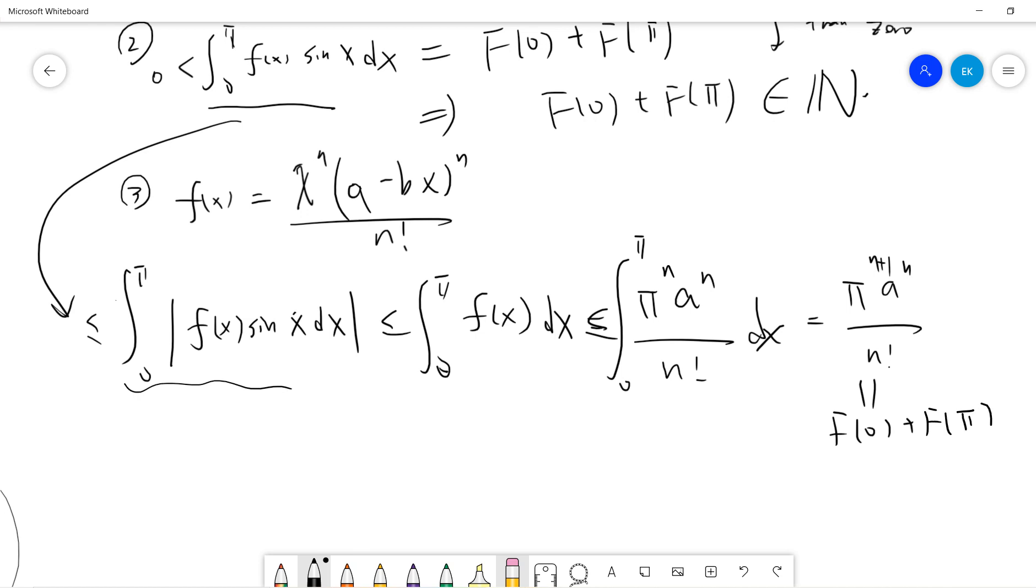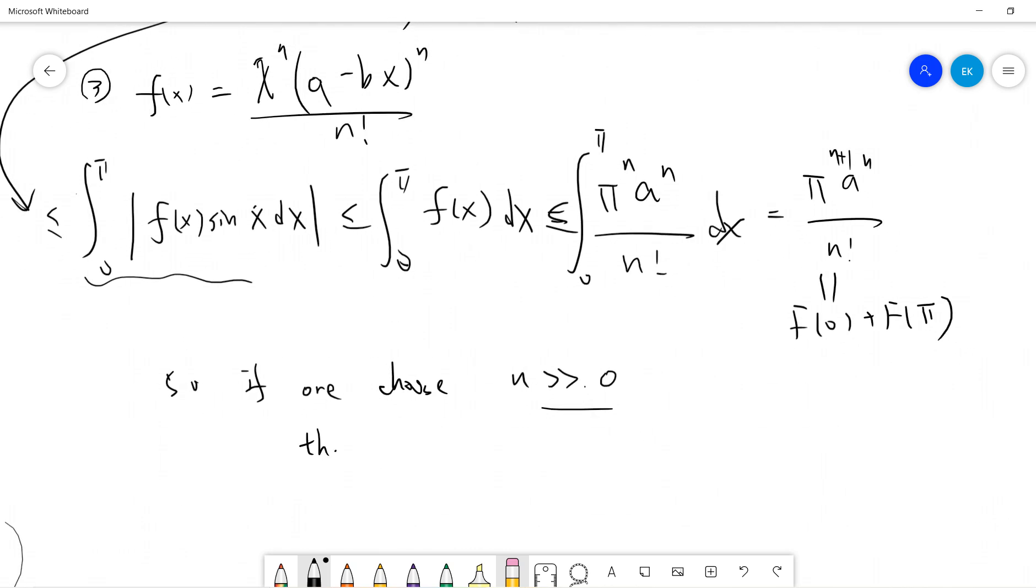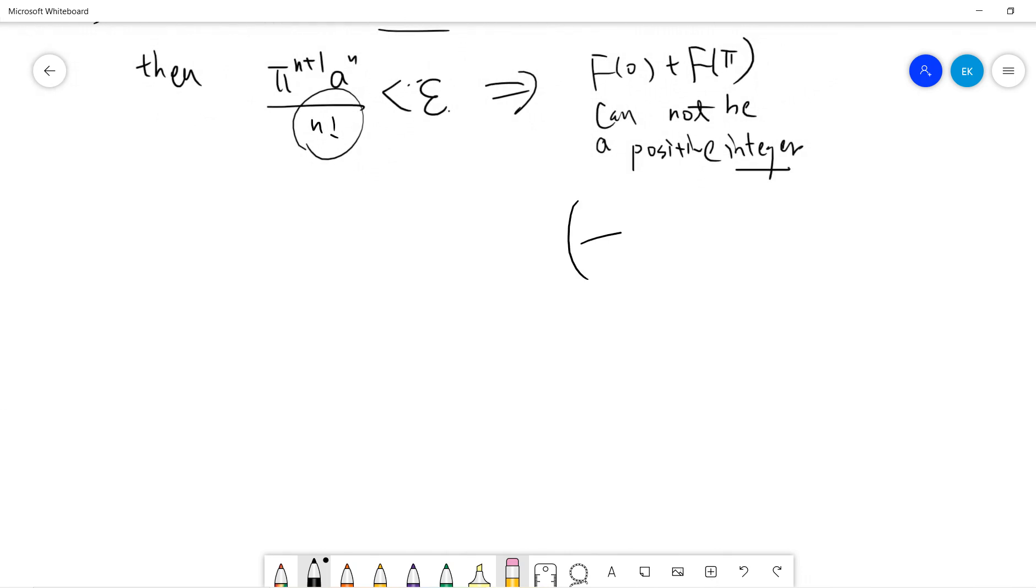If one chooses n large enough, then π^(n+1) times a^n divided by n factorial can be made arbitrarily small, because n factorial dominates once you fix a. So F(0) plus F(π) cannot be a positive integer, which leads us to the contradiction. Finally, we know that π is irrational.